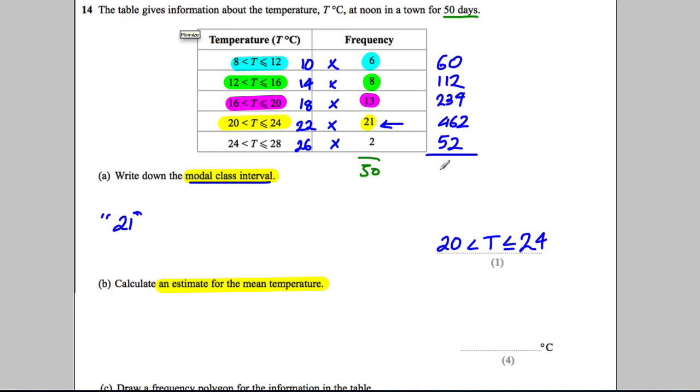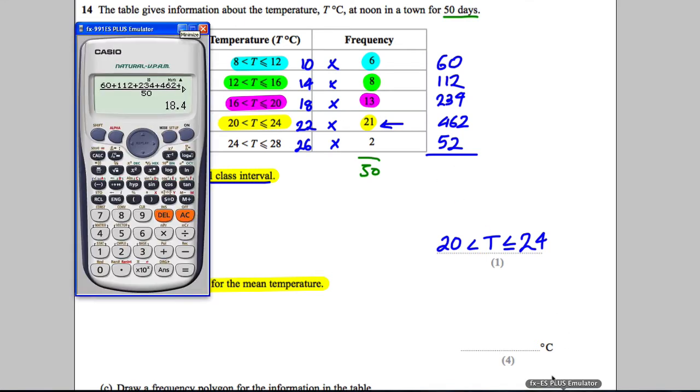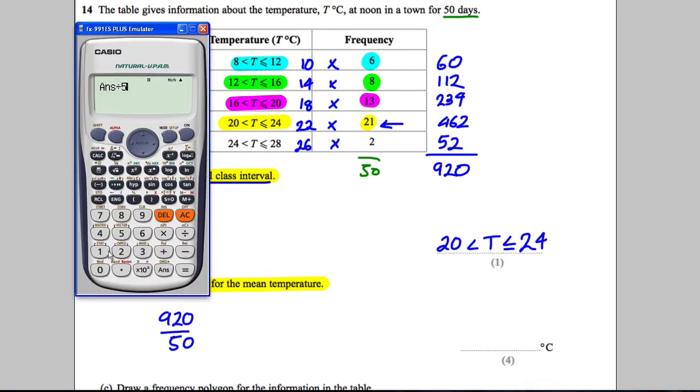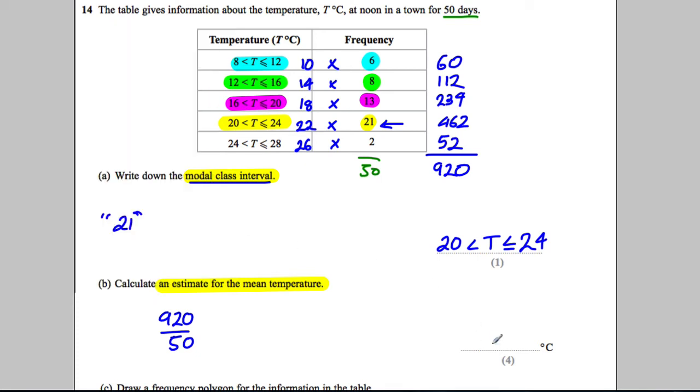So we should show that these added to 920, I should have said. So the mean is 920 divided by 50, which we said before is equal to 18.4 degrees.